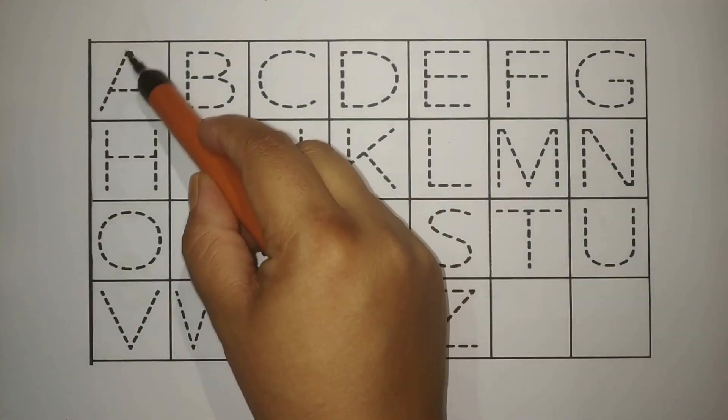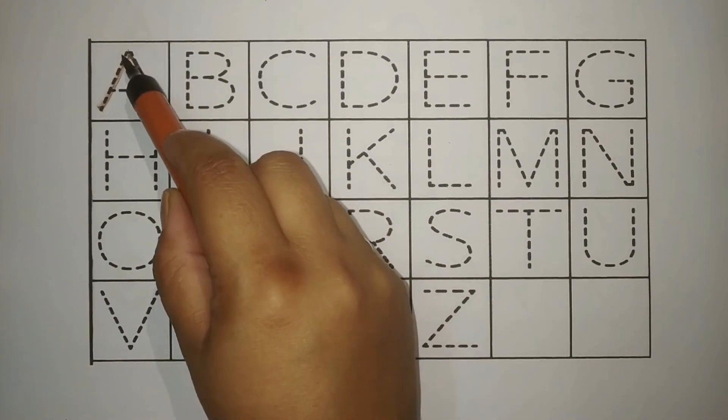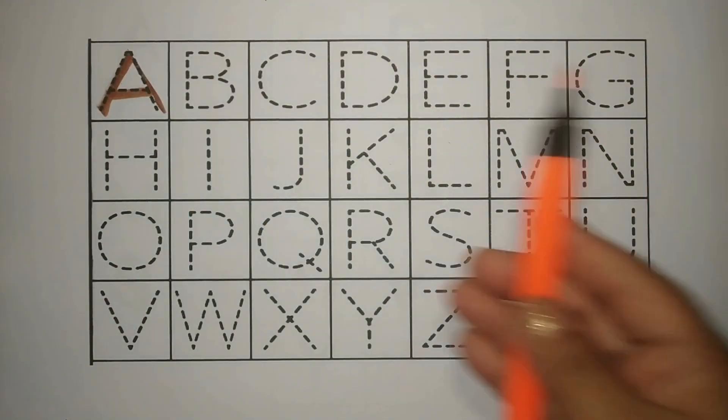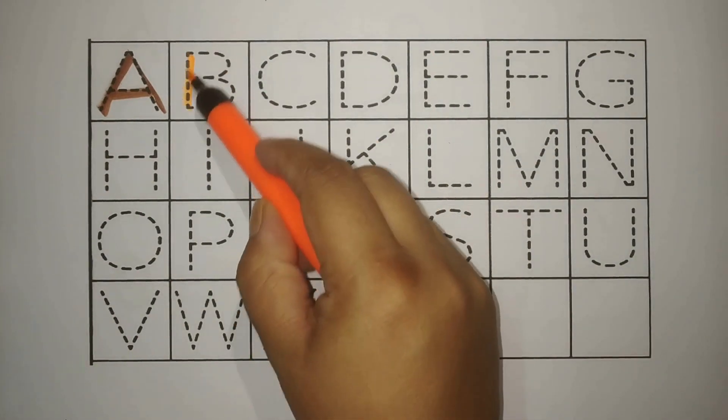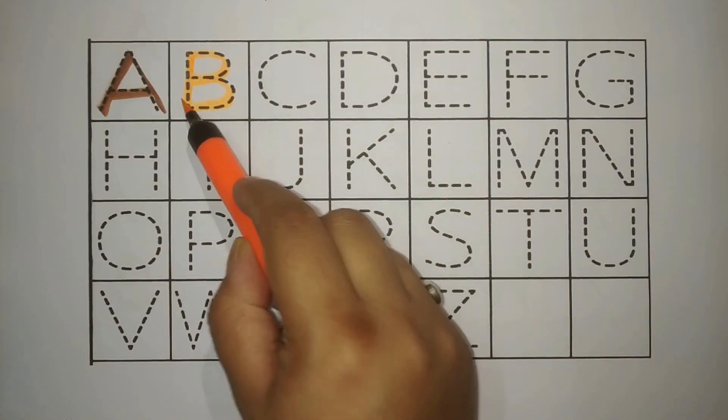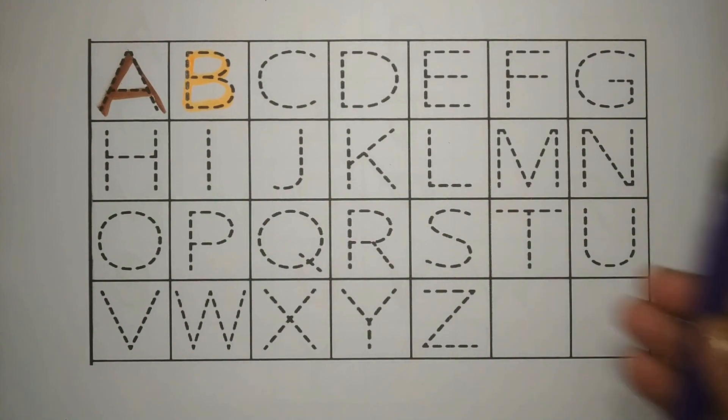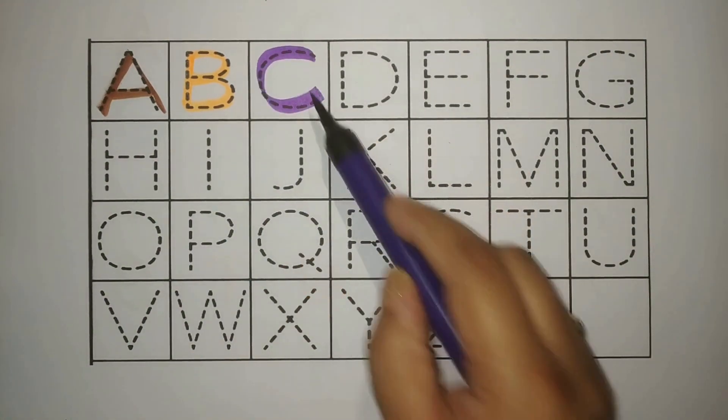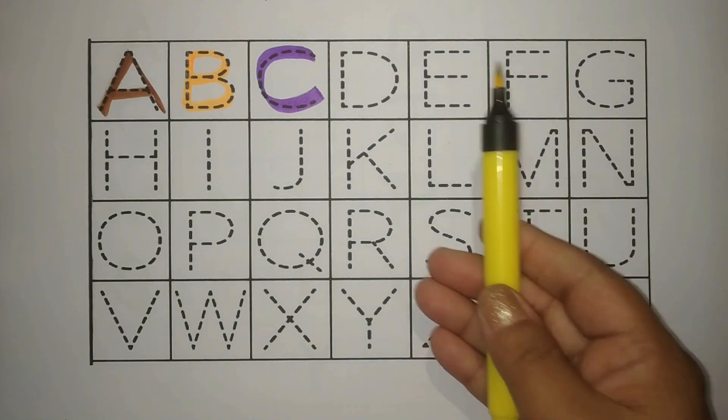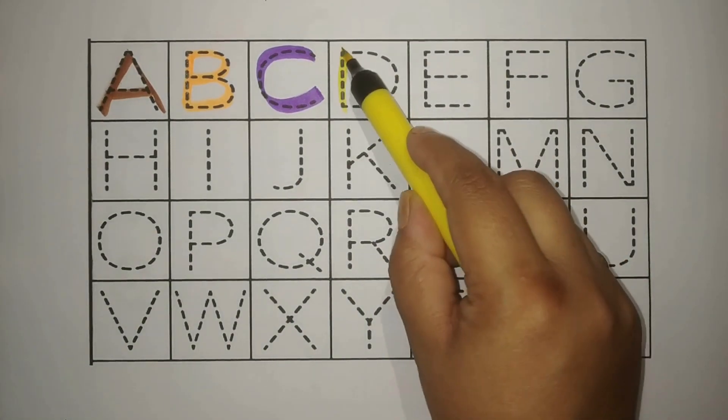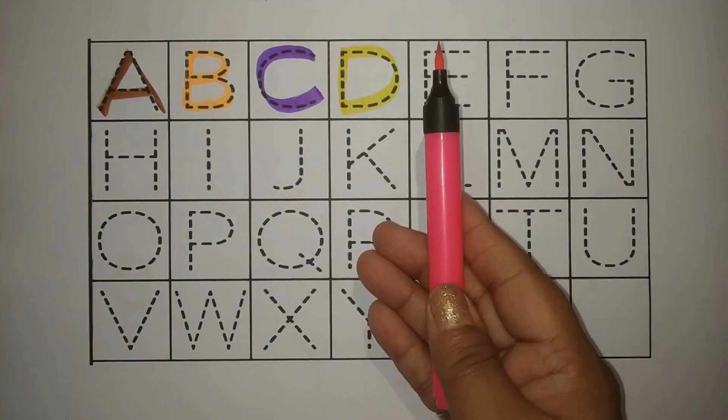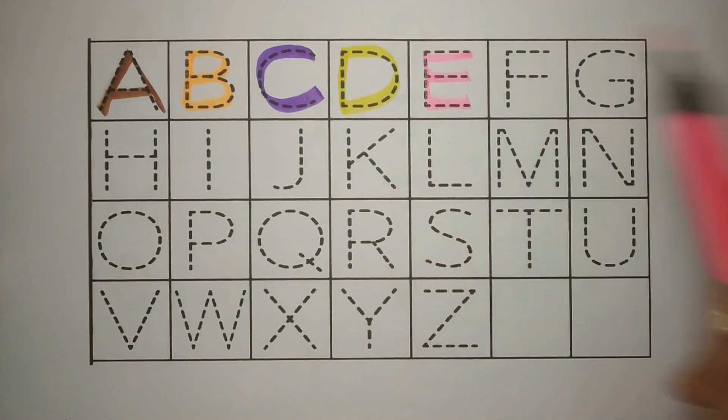Brown A, A for Apple. An apple a day keeps the doctor away. Orange B, B for Ball. Purple C, C for Carrot, Gajar. Yellow D, D for Donkey, Gada. Pink E, E for Egg, Under.